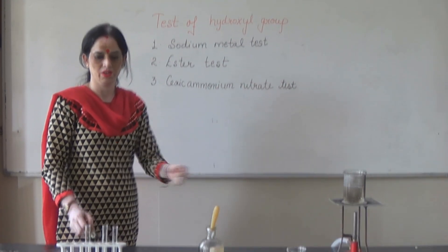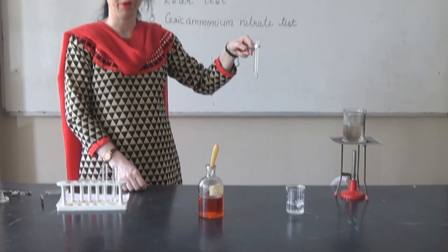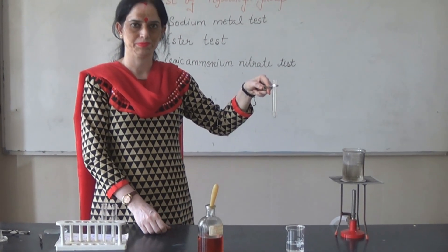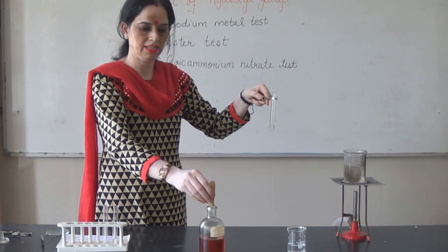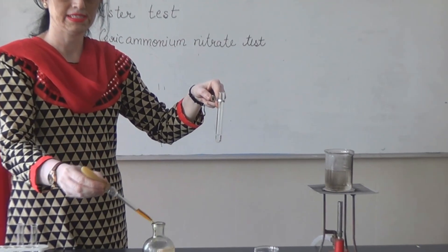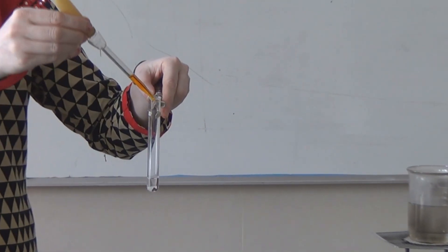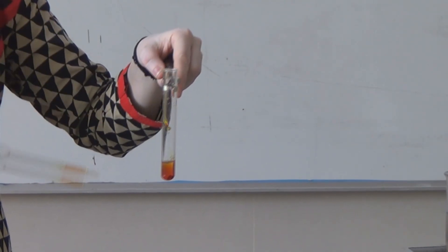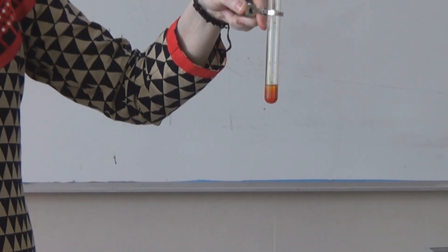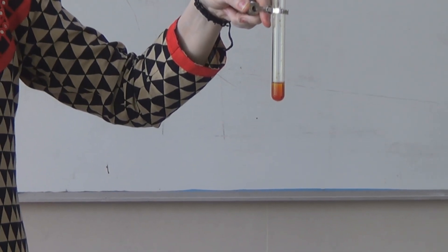In this test we require small amount of organic compound and ceric ammonium nitrate solution. In this experiment we add few drops of ceric ammonium nitrate solution to the organic compound. Formation of red coloration detects the presence of hydroxyl group in the given organic compound.